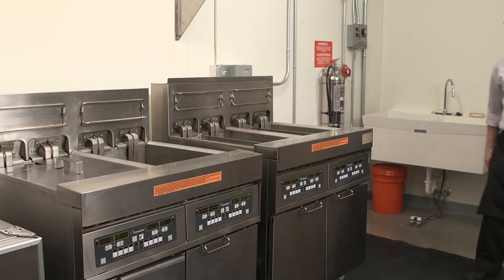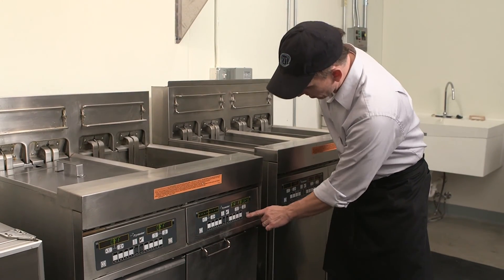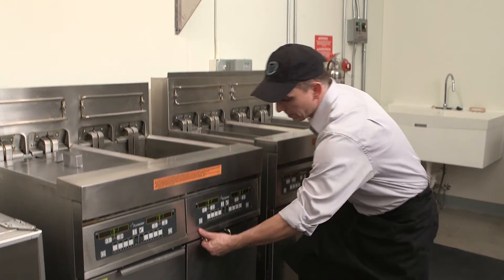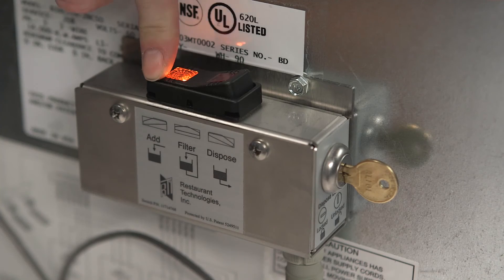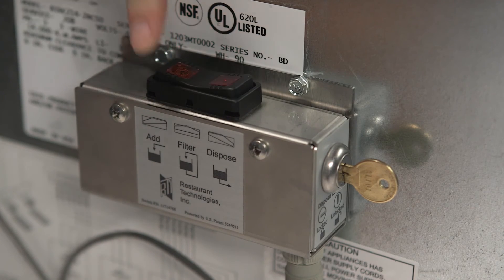Once the portable oil unit is connected, an employee in the kitchen can add fresh oil and dispose of used cooking oil simply by pressing a selector switch inside the fryer.